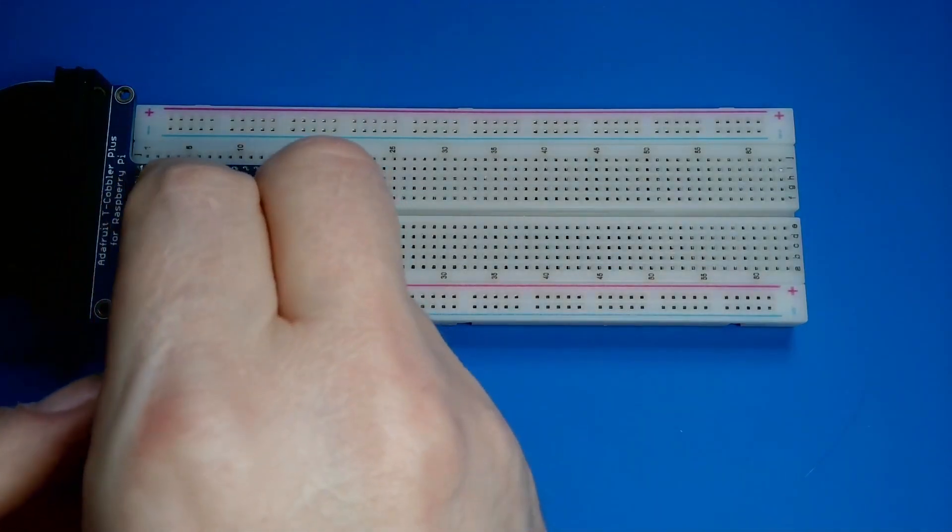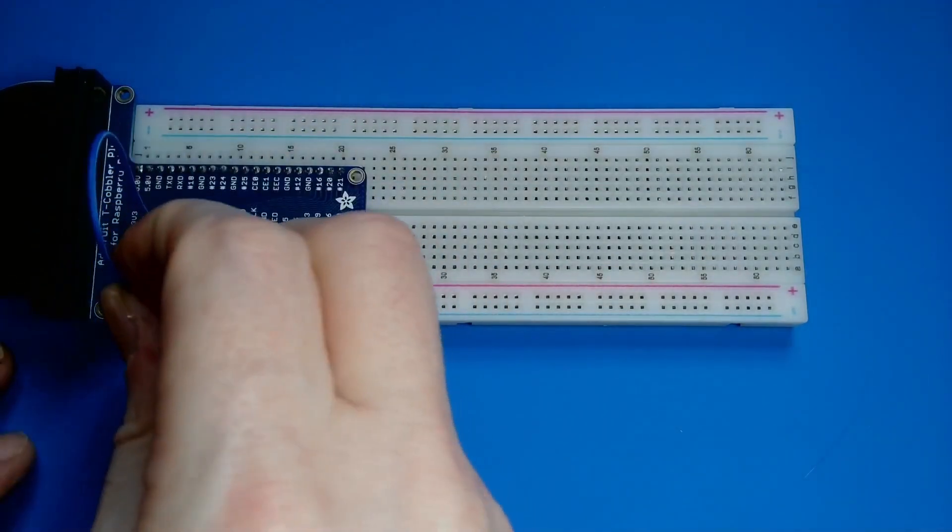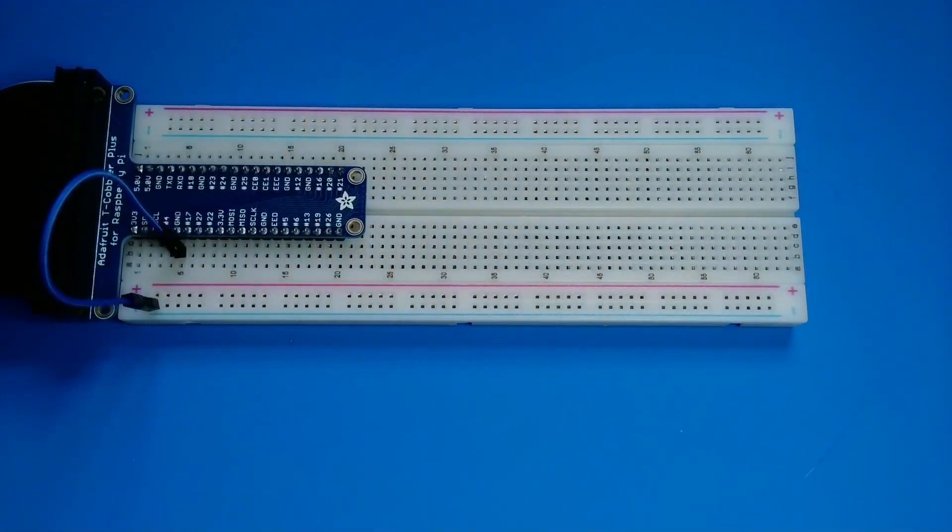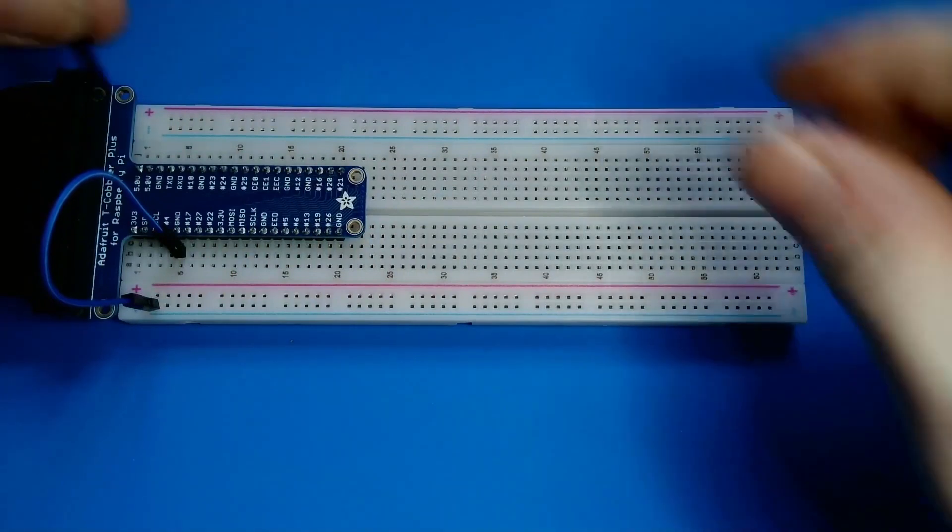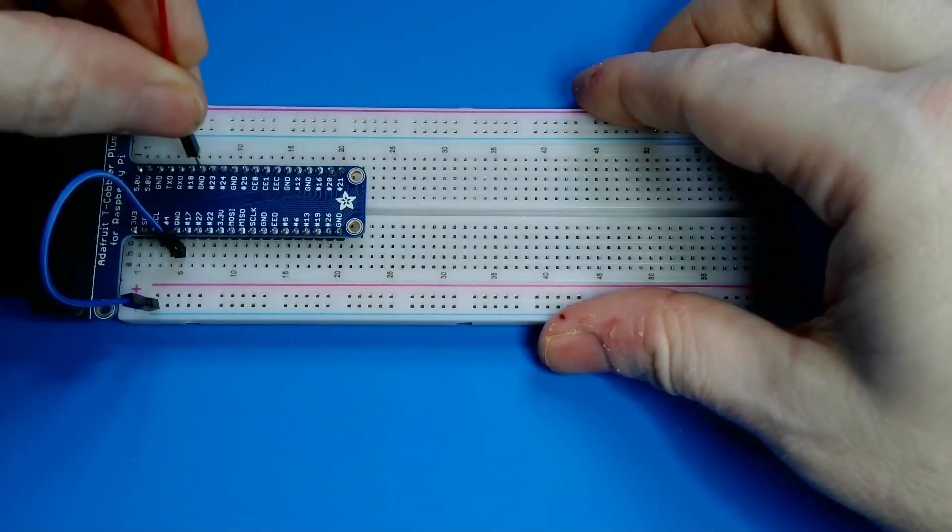I'll start by connecting one of the ground pins to the negative rail on the edge of the breadboard. Then I'll connect pin 18 to an empty row.